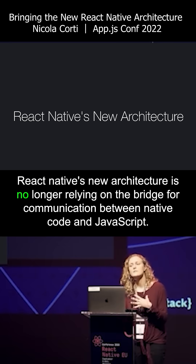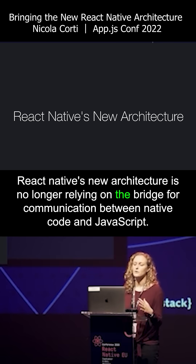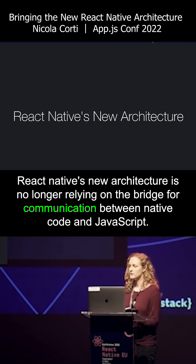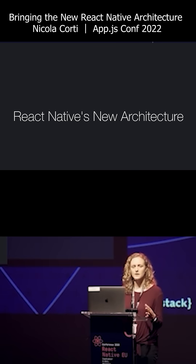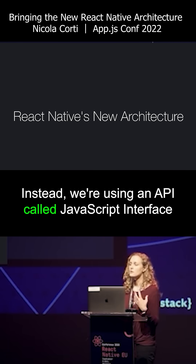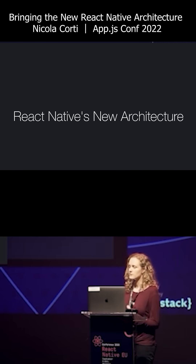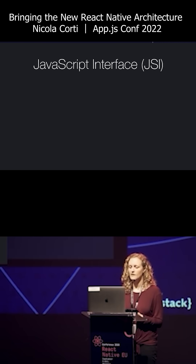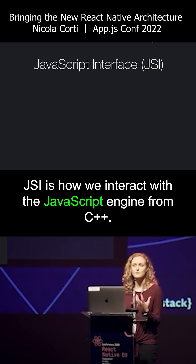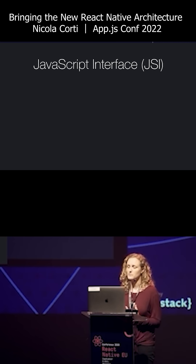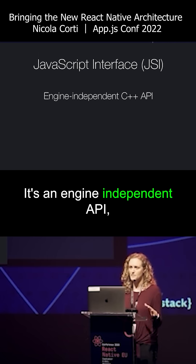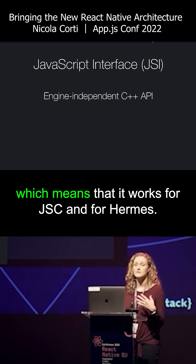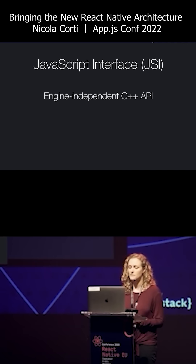React Native's new architecture is no longer relying on the bridge for communication between native code and JavaScript. Instead, we're using an API called JavaScript Interface, or JSI. JSI is how we interact with the JavaScript engine from C++. It's an engine-independent API, which means that it works for JSC and for Hermes.